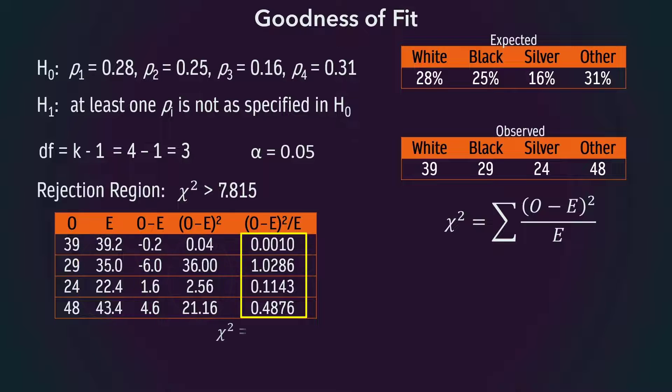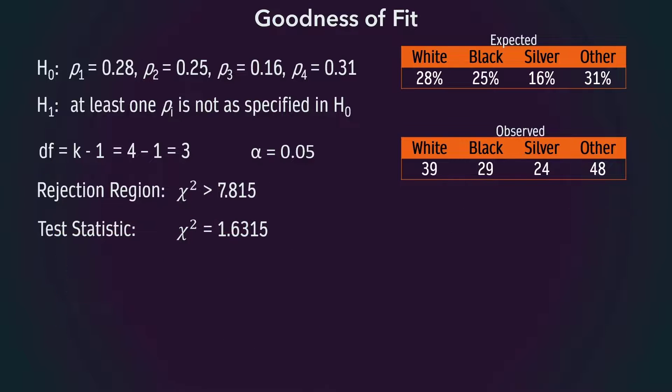The sum of this last column is 1.6315. And it is the value of the chi-squared statistic for this test. Since this test statistic is not greater than the critical value, we fail to reject the null hypothesis.